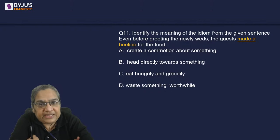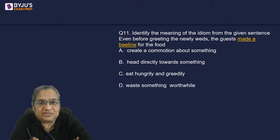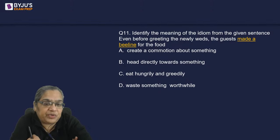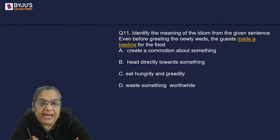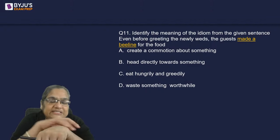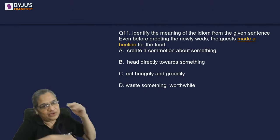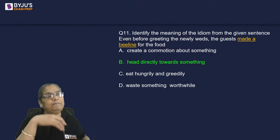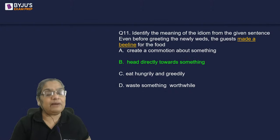'Even before greeting the newlywed, the guest made a beeline for the food.' Options: create a commotion, head directly towards something, eat hungrily and greedily, or waste something worthwhile. How do bees move? If you disturb a hive of bees, all of them come straight at you — wherever you run, they chase you. So 'make a beeline for something' means to head directly towards something, quickly and directly.